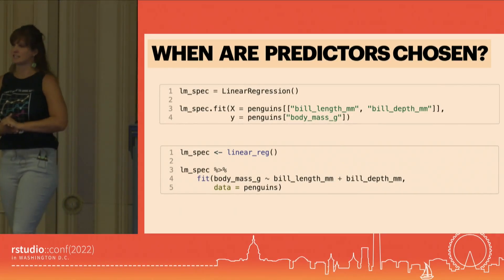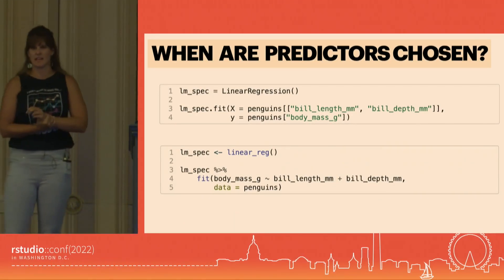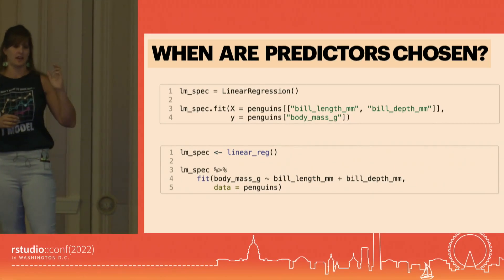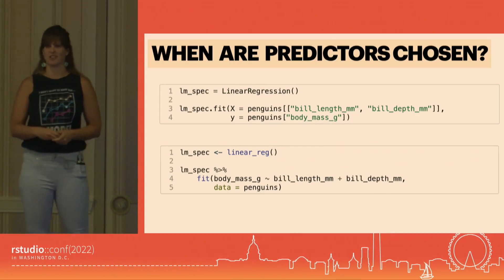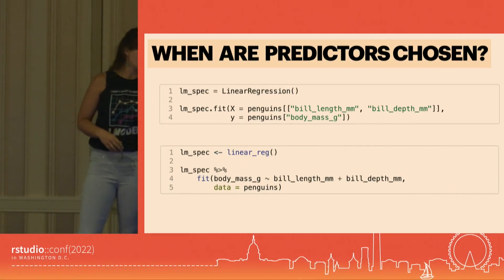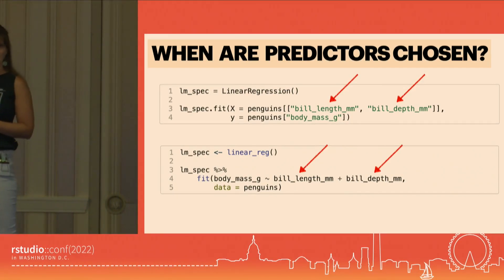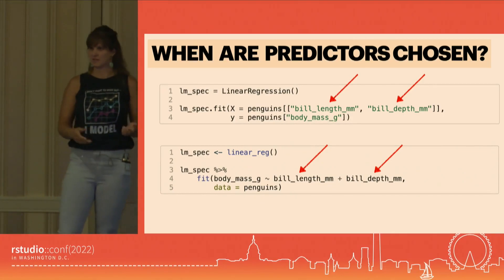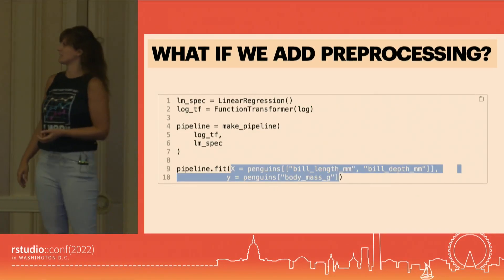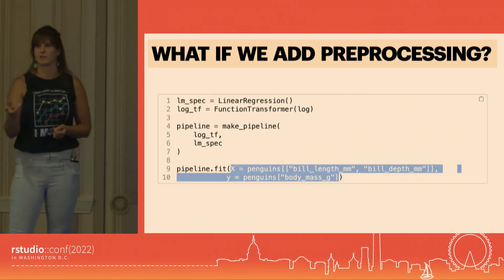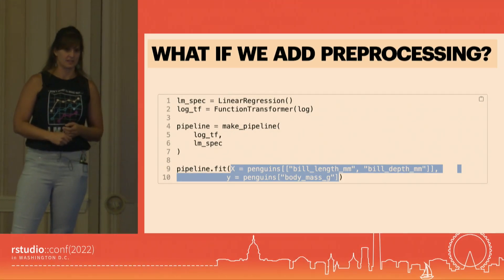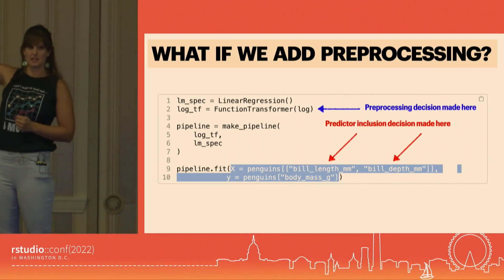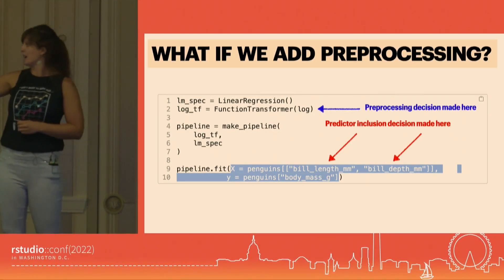Here are two code chunks. The top one is scikit-learn in Python; the bottom is tidymodels in R. When in these two chunks do we decide which predictors are going into our model? It's just a linear model with a couple of predictors. At the moment where you are fitting the data after you've specified your model, that's when you're declaring which variables are part of this model — and it feels kind of the same in both languages right now. But then you start thinking about preprocessing. Here's some Python code that includes a step where we are log-transforming both of our quantitative predictors. In Python, the preprocessing decision happens early, and then the decision about which predictors we apply that to happens at the fifth step.